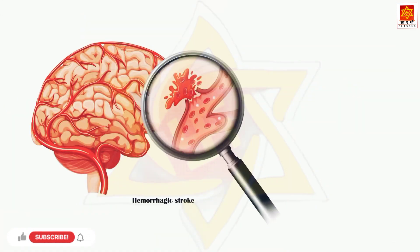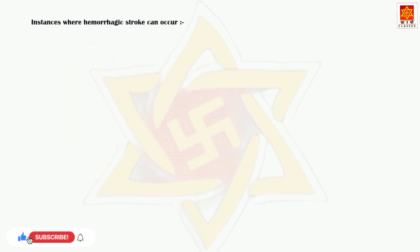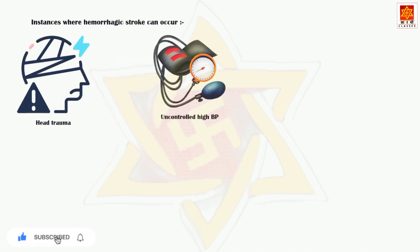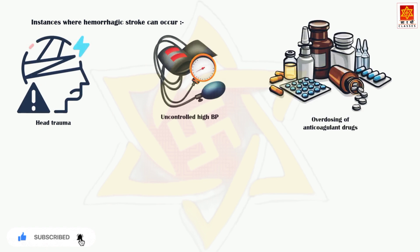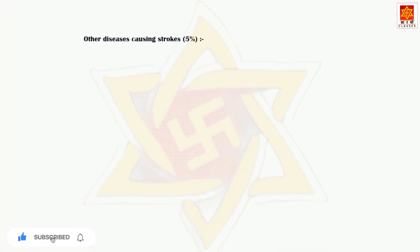Hemorrhagic stroke, on the other hand, occurs when a weakened blood vessel supplying the brain bursts and subsequently bleeds into the area. Hemorrhagic strokes account for around 10% of all the cases of stroke. Common instances include head trauma, uncontrolled high blood pressure, overdosing of anticoagulant drugs, ruptured brain aneurysms, and cerebral amyloid angiopathy. Approximately 5% of strokes are caused by other diseases like arterial dissection, venous sinus thrombosis, and vasculitis.